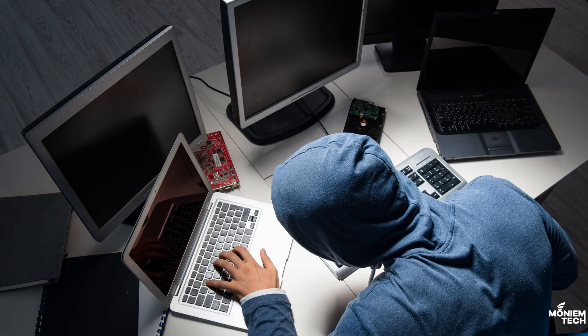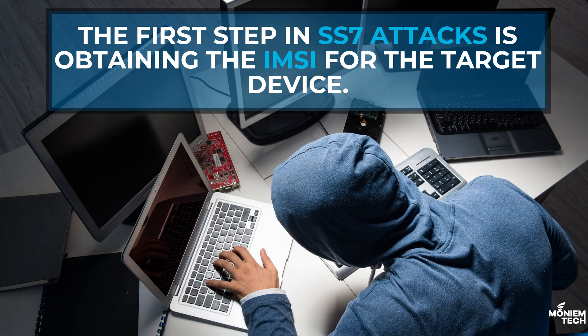The first step in SS7 attacks is usually to obtain the target's IMSI. This is the main target for all attackers — to get the IMSI of a target person in order to track them, listen to their communications, and steal their credentials, and so on.